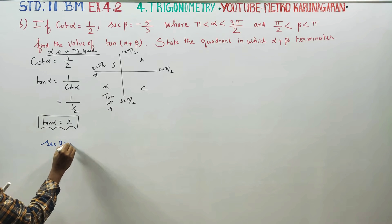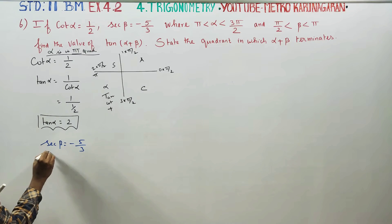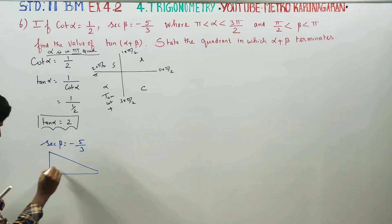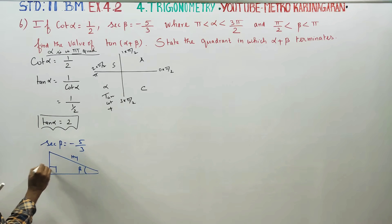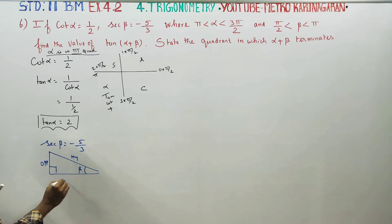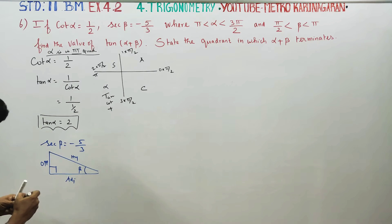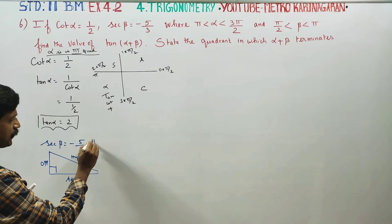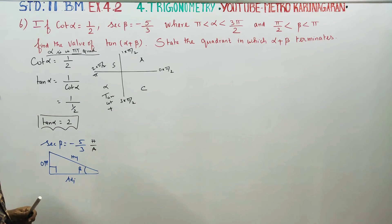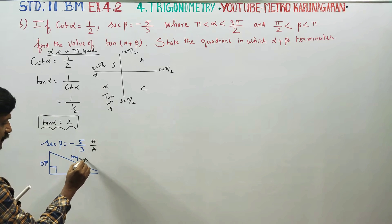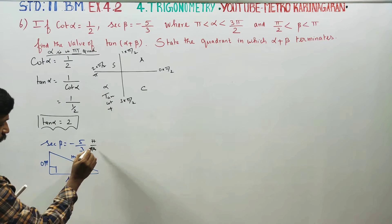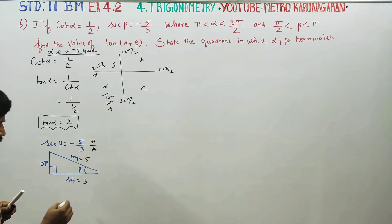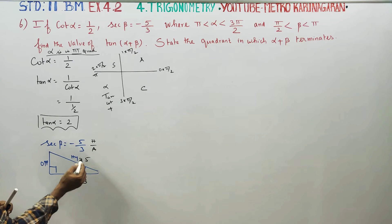Sec β is equal to minus 5 by 3. Draw a right angle triangle — it is 90 degrees. This is the hypotenuse, this is beta, beta is opposite, and this is the adjacent side. Secant formula is hypotenuse by adjacent, so hypotenuse is 5 and adjacent is 3.